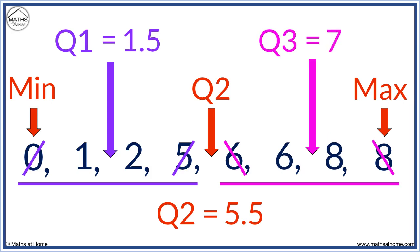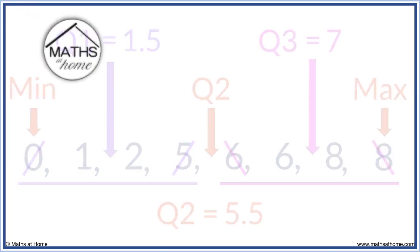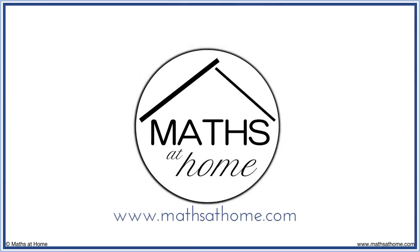We now have the five number summary. The minimum is zero. The maximum is eight. Q1 equals 1.5. Q2 equals 5.5. And Q3 equals seven. Visit mathsathome.com for further videos and practice.